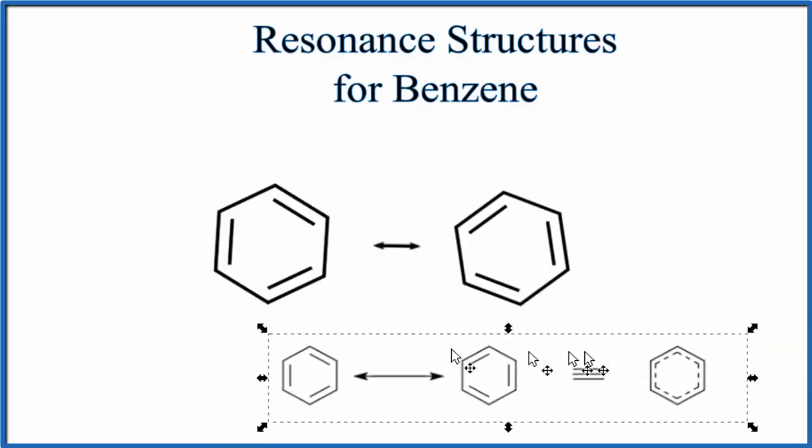We have our two resonance structures, and the actual structure in real life is a mix of the two. So they're not switching back and forth. It's more a limitation of how we can represent the electrons with Lewis structures. So in nature, they're actually an average between the two resonance structures.